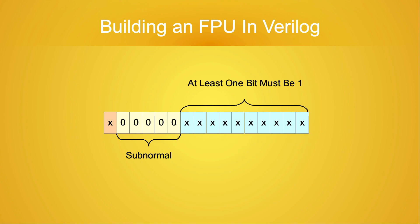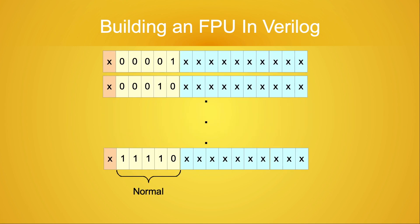When the exponent bits are all zero and any bit in the significand is set to one, the value is a subnormal value. The exponent field of the half-precision format has five bits, which means the field can hold any value from zero to thirty-one. The exponent values of zero and thirty-one are the special cases — all zero or all ones respectively. Any other value for the exponent, that is any value from one to thirty, means that the number represented is a normal number.